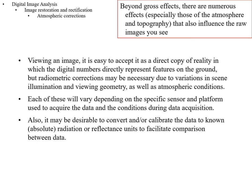It's easy to accept that what you're looking at is a direct copy of reality, in which the digital numbers directly represent features on the ground. But you have these variations in scene illumination, viewing geometry — the direction in which the surface is relative to the sensor — as well as atmospheric conditions. Each of these will vary depending on the specific sensor and platform used and the conditions during data acquisition. It may also be desirable to convert or calibrate the data to known absolute units.